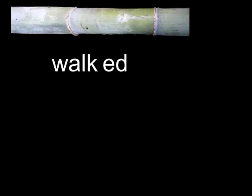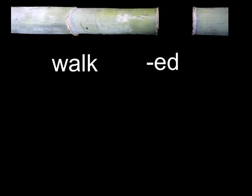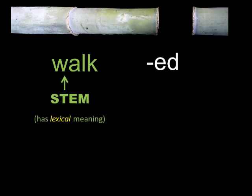Different types of morphemes have different names. Look at the example of 'walked'. This one word contains two morphemes. The main part of the meaning of the whole word is 'walk', so this is called the stem. Sometimes it is also called the base or the root — this is a meaning you could look up in a dictionary. Linguists describe this by saying it has lexical meaning.